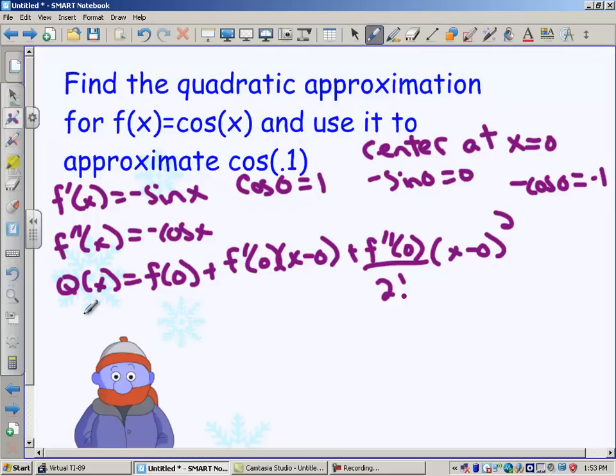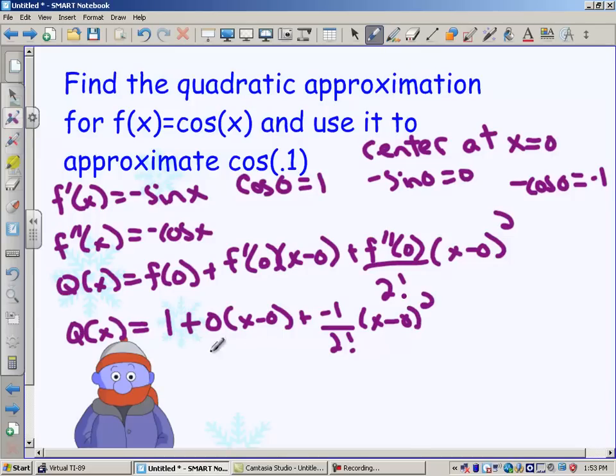So let's plug all of this in. My quadratic approximation is f of 0 plus f prime of 0 times x minus 0 plus f double prime of 0 over 2 factorial times x minus 0 squared. And let's clean this up a little bit. We're going to get that the quadratic approximation is 1 minus 1 half x squared.